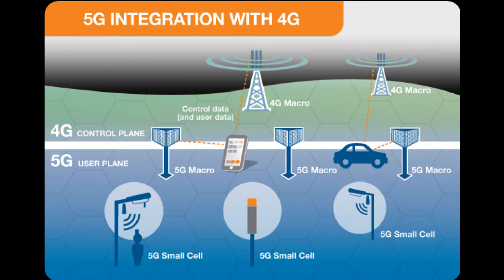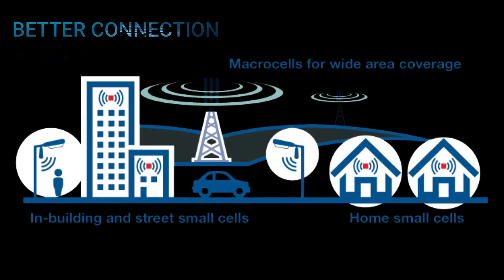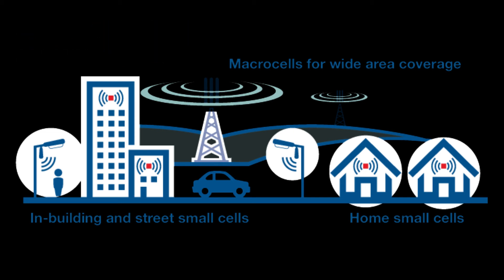5G networks are designed to work in conjunction with 4G networks using a range of macro cells, small cells, and dedicated in-building systems. Small cells are mini base stations designed for very localized coverage, typically from 10 meters to a few hundred meters, providing infill for a larger macro network.